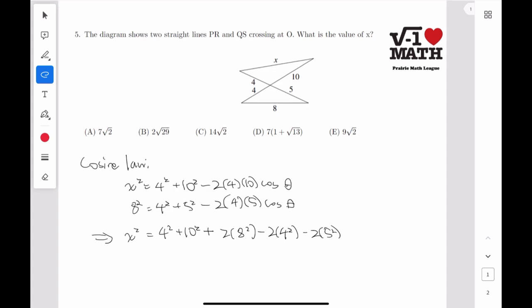For problem number 5, we have a diagram which shows two straight lines crossing at a point O, and we wish to find the length of x. So we see that there is a triangle here, and we know its side length, so we know this angle theta.